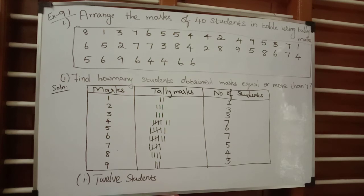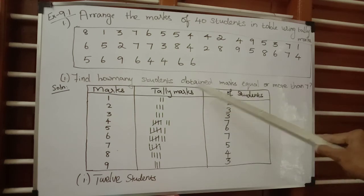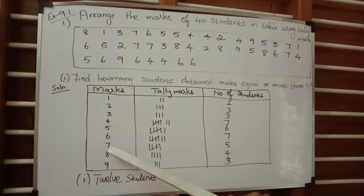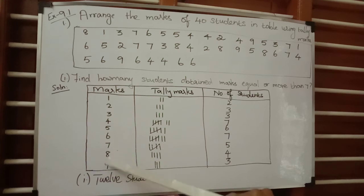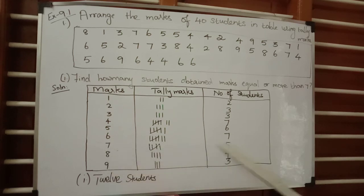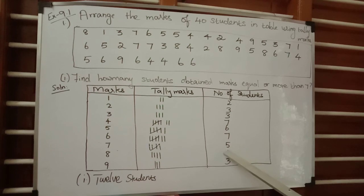This is a simple question where you need to understand tally marks: the first four lines are drawn vertically and the fifth line is drawn diagonally across the previous four. Complete the tabular column with the number of students for each mark. The main question asks for students with marks equal to or more than seven — that is marks seven, eight, and nine — with five, four, and three students respectively, totaling twelve students.